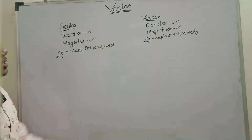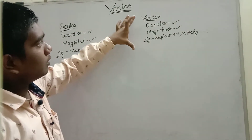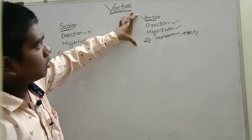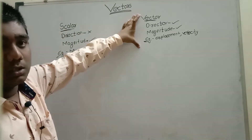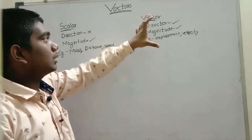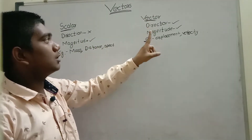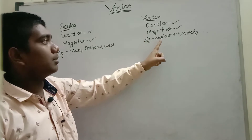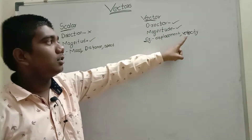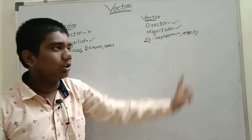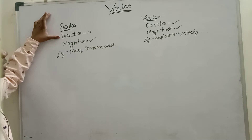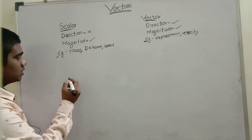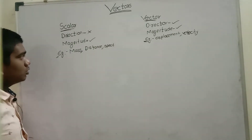In this chapter we are going to see the types of vectors. Vector means which has both direction and magnitude — for example, Displacement and Velocity. Scalar means which has no direction but there is magnitude, meaning a certain value.